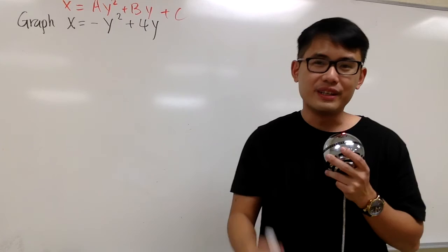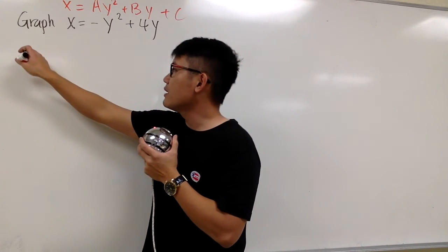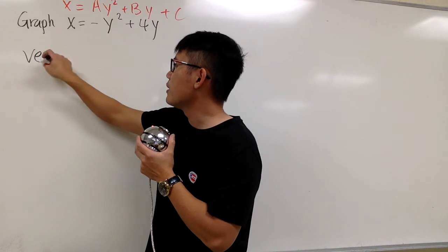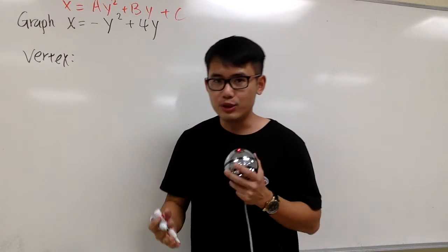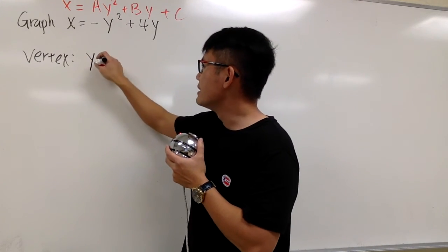And I have to find the vertex first. So to graph this, let's use the vertex formula to find the vertex. For the vertex in a sideways situation, it's the y. We have y, it's equal to...